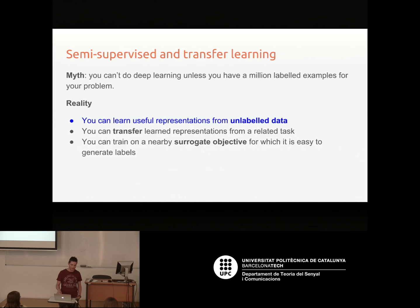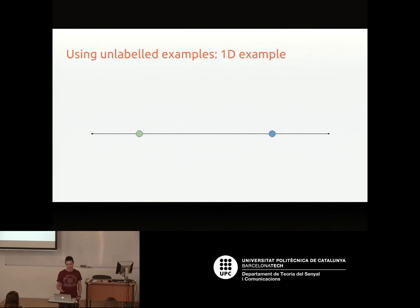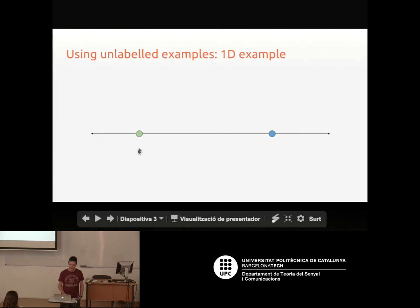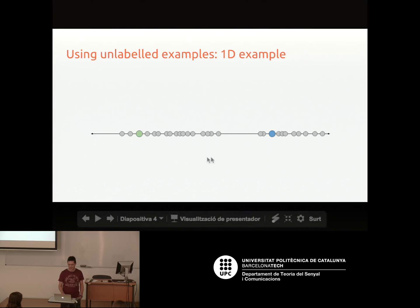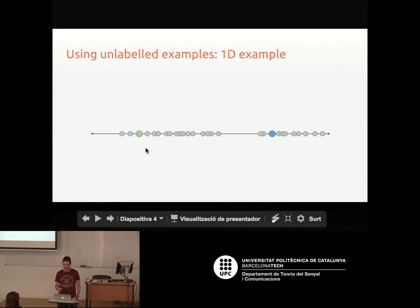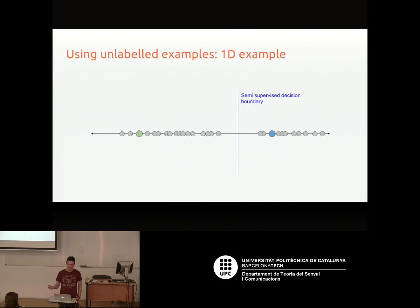To motivate why this may even be possible, this figure here shows some points you want to classify in one dimension. If all you have is two examples, the best you can do is a maximum margin boundary that sits in the middle. But if someone gave you more data instead, you might think there's a better place to put the classification boundary, because these points appear drawn from Gaussians centred at different locations. So your semi-supervised boundary would be different — we've learned something without any labels, simply by looking at proximity and how things cluster together.